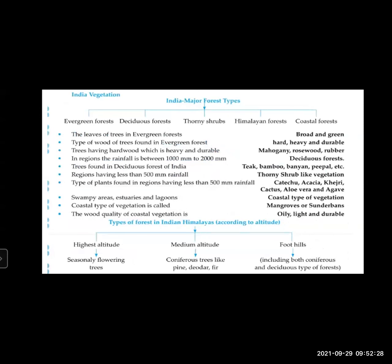Now we will see India vegetation. The major types of forests of India are: evergreen forests, deciduous forests, thorny shrubs, Himalayan forests, and coastal forests. These are the major types of forests found in India.